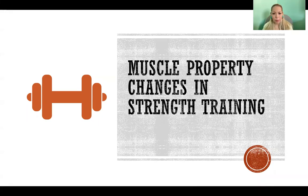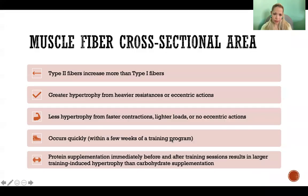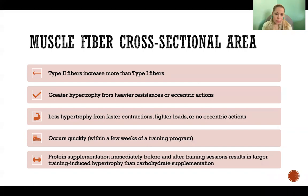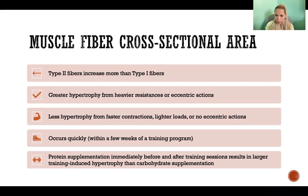In this video, I'm going to talk about muscle property changes in strength training. First, we have muscle fiber cross-sectional area. Muscle fiber cross-sectional area increases in response to strength training — that's largely where hypertrophy happens, by the muscle fibers increasing in cross-sectional area. Type 2 fibers increase to a greater extent than type 1 fibers, but both are capable of hypertrophy.